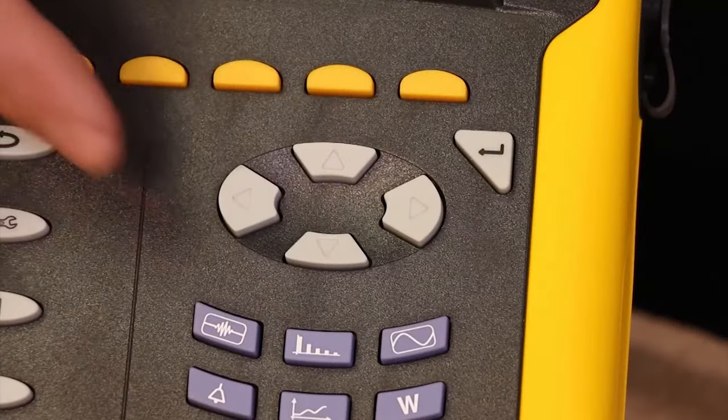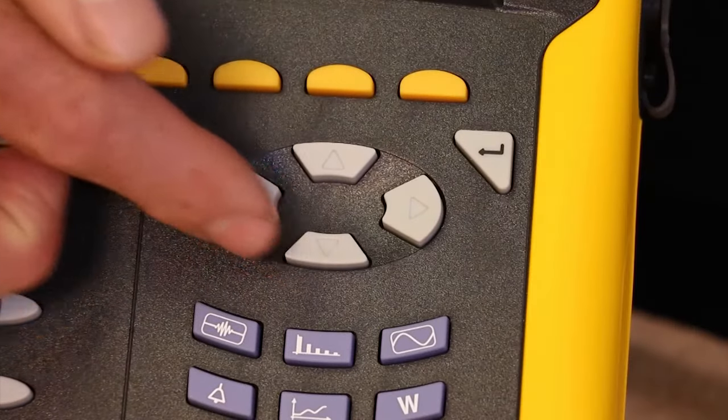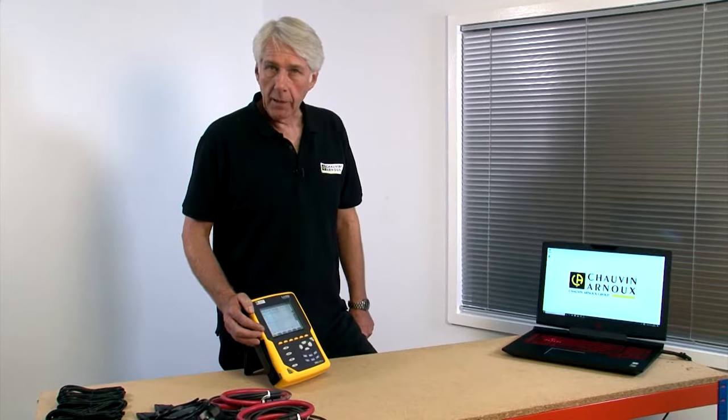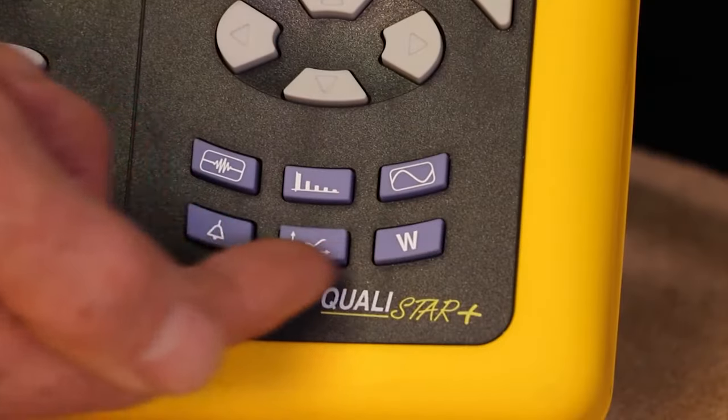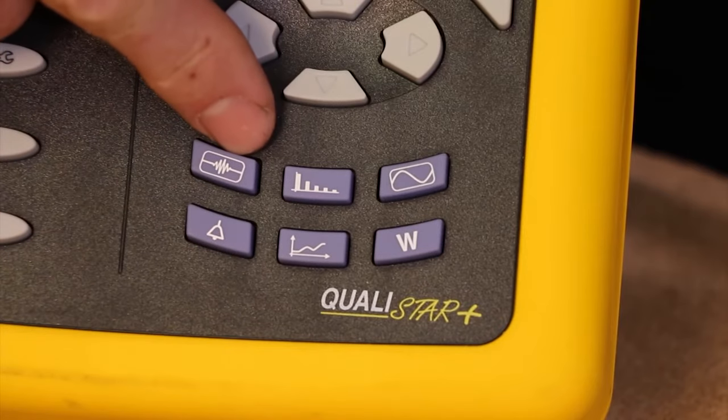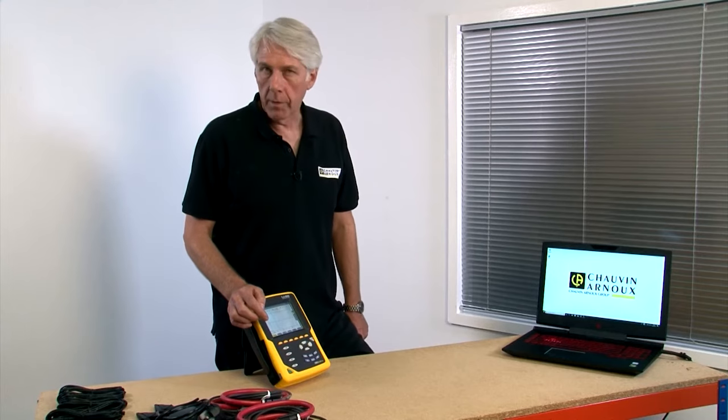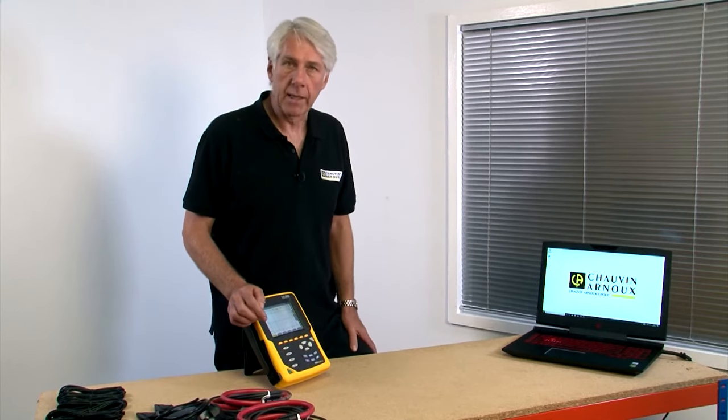And here we have the four standard cursor keys and an enter key. The usage of these six keys will become apparent as we move through the product, but essentially they take you from screen to screen, looking at watts, alarms, the waveform, the harmonics, etc.